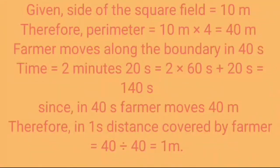Therefore in 140 second distance covered by farmer will equal to 140 meter. Now number of rotations to cover 140 along the boundary will equal to total distance by perimeter which will equal to 140 meter divided by 40 meter which will equal to 3.5 round.